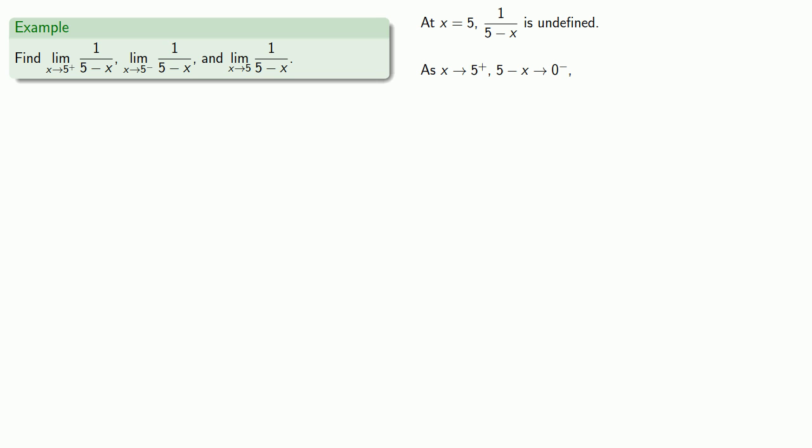That means 1 over (5 minus x) is going to be 1 over a small negative number. When I divide 1 by a small negative number, I get a large negative number, which I can write as minus infinity. So our limit is minus infinity.